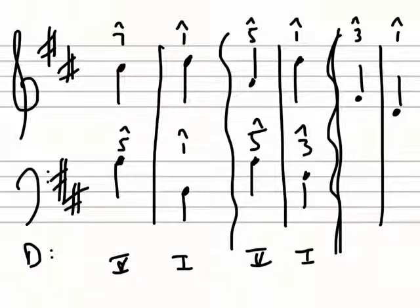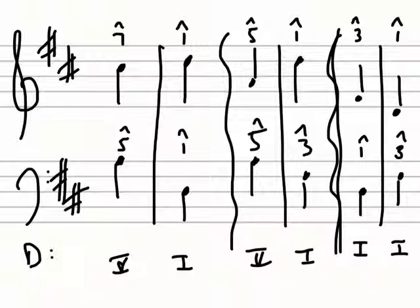Or in the last example, where we have scale degree three and scale degree one, they're both part of the tonic chord, so we exchange scale degree one and scale degree three instead. There are many other different possibilities. Look at the example in your book to see the range of things that you can do with a pickup or anacrusis going to the first downbeat.